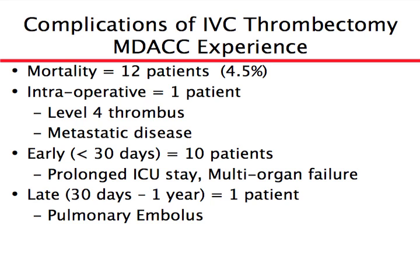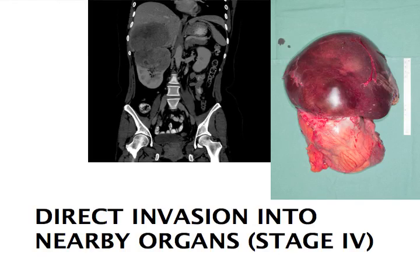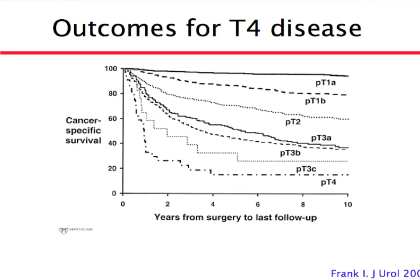The second topic in advanced disease is tumor invasion into adjacent organs. This CT scan shows a tumor in the upper right kidney that has invaded directly into the liver — not a blood-borne spread, but direct extension. This patient underwent surgery in conjunction with our liver surgery colleagues. We removed the kidney together with the involved portion of the liver to ensure complete tumor removal. This is considered T4 disease — T standing for tumor, T4 meaning invasion into adjacent organs.